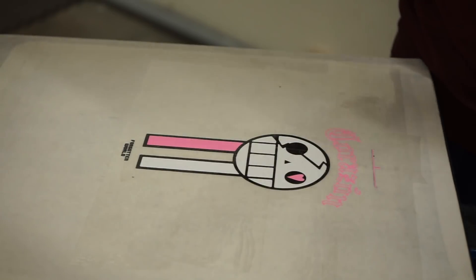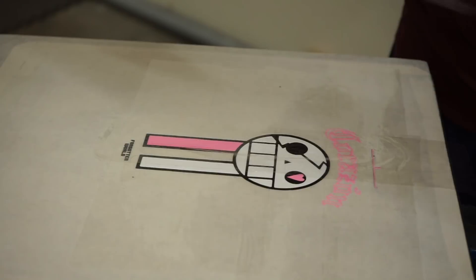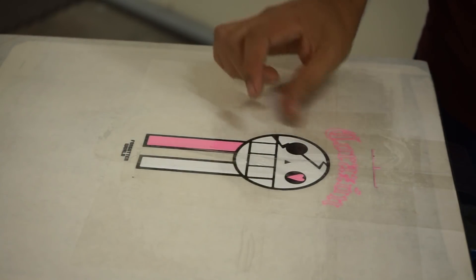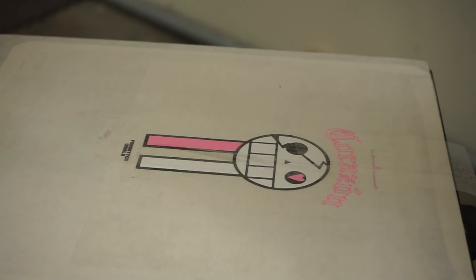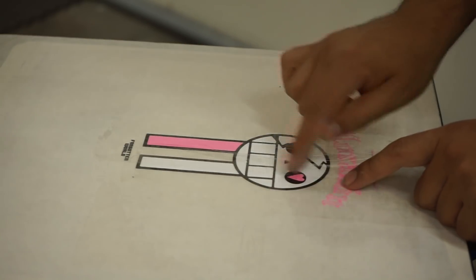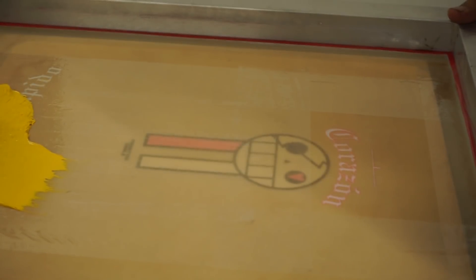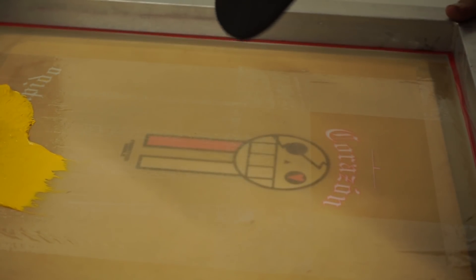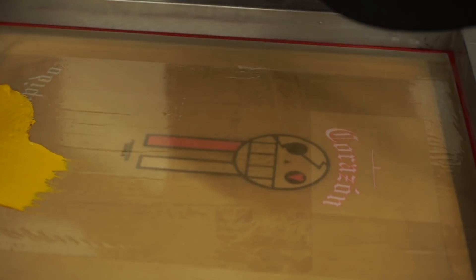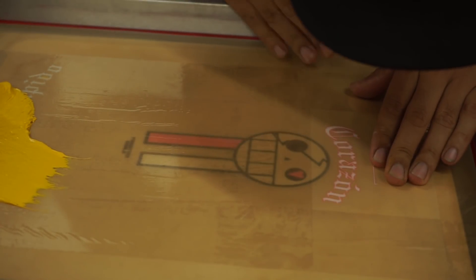Now let's tape over the pink. The last thing we're going to do is make sure that the yellow lines up inside of the pink, because we already know that the pink is lining up with the black down here. It looks like it's off just a hair.